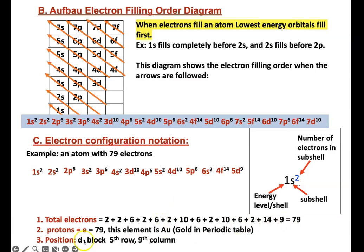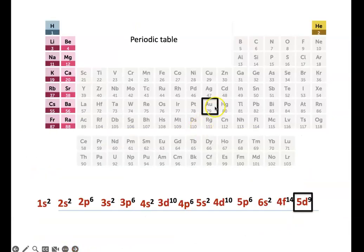If we go to the next page, here is gold. It's in 5D, 9th column. So, it has 9 electrons in the 5 energy level D subshell.